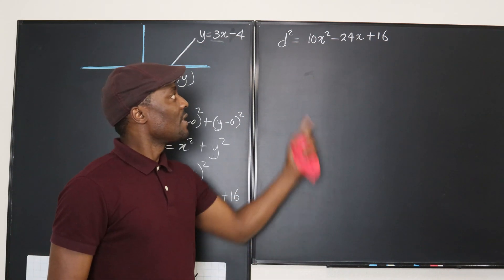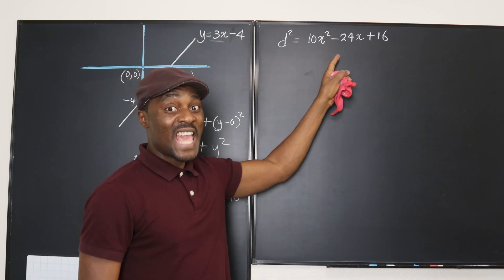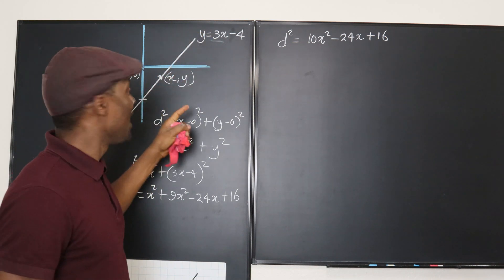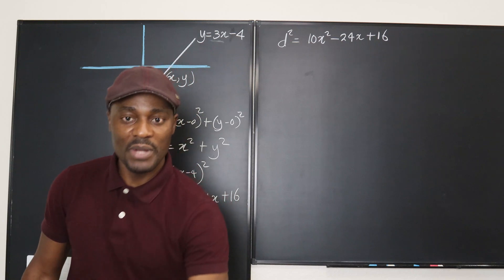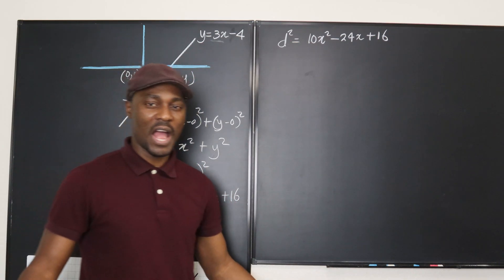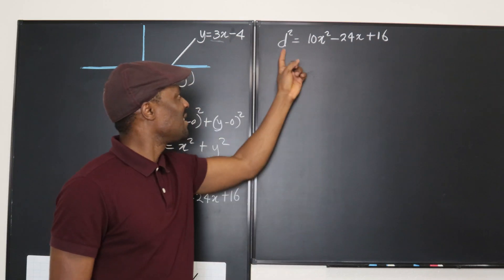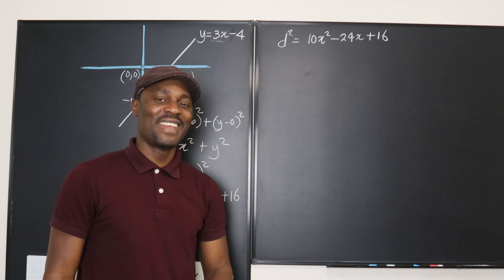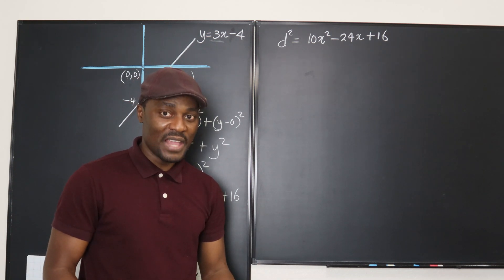At this point, this is the distance of any point on this line to the origin, 10x squared minus 24x plus 16. So how do we find the shortest distance? How do we find when this distance is smallest? That's how we say it. That's what is called minimization in calculus.